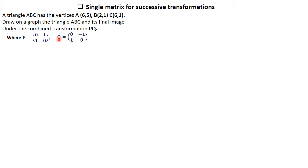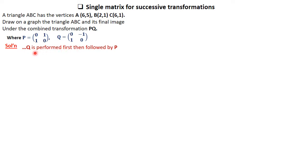We are given that P is the matrix [0,1; 1,0] and Q is the matrix [0,1; -1,0]. Now, as we do the question, we need to know that Q is performed first. That is, first subject the triangle under the transformation of matrix Q.